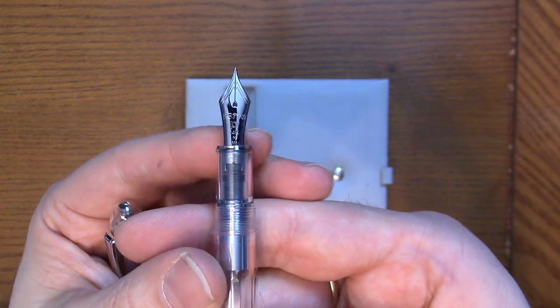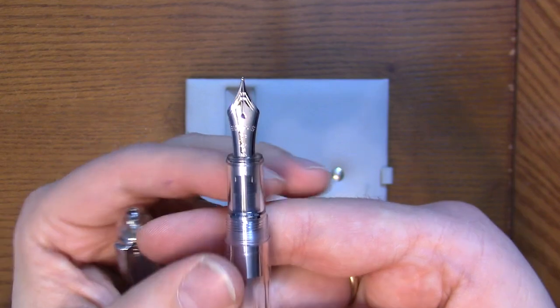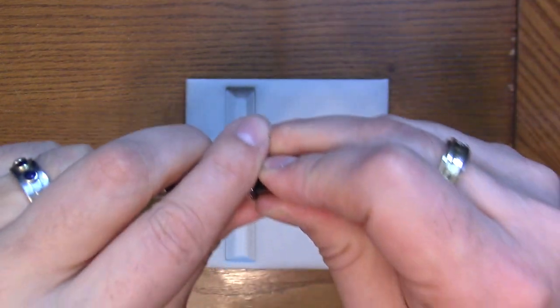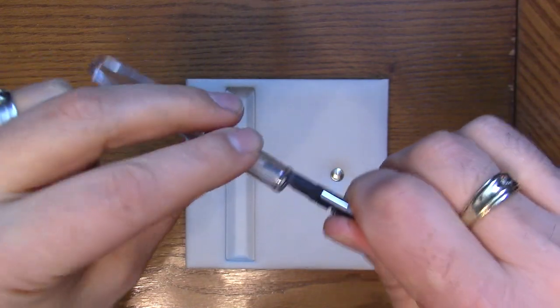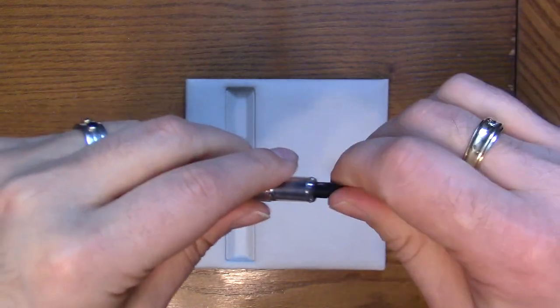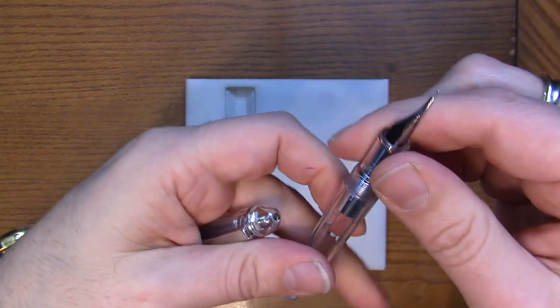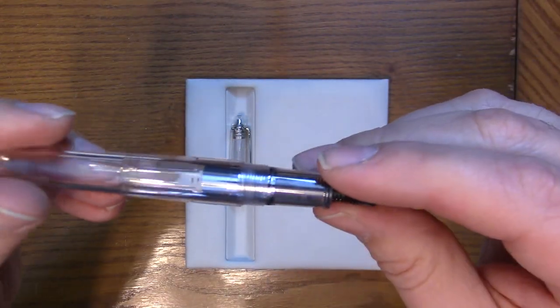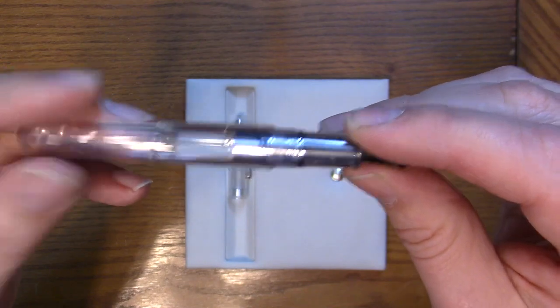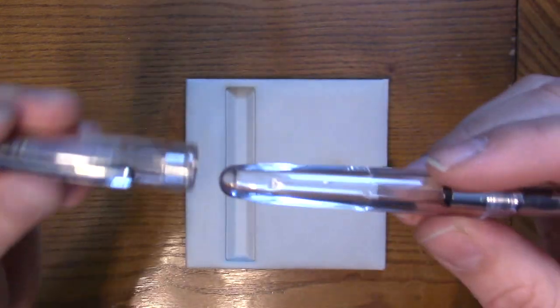Looking at the section you can see the outline of the nib. These nibs are friction fit and they just pull straight out. And the nice thing about these is they just go straight back in. They don't go in any particular way so you don't have to worry about trying to line it up with something inside the section.